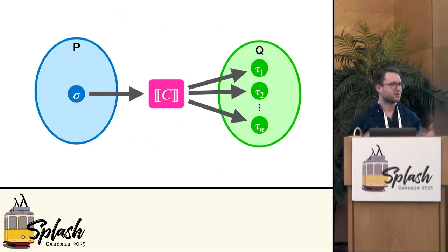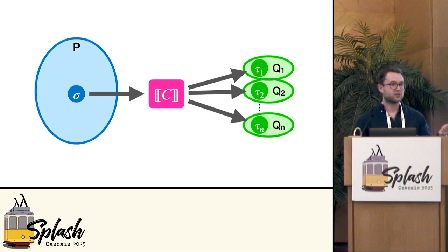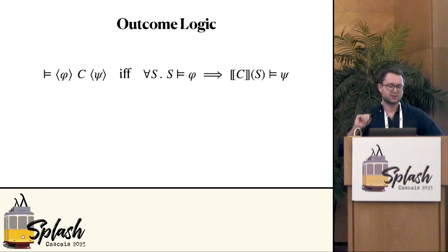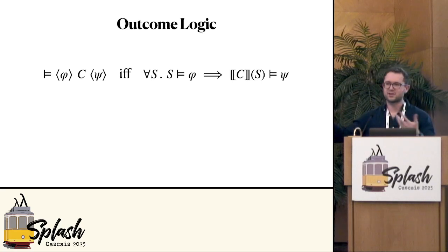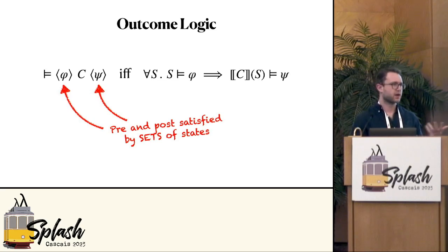Going back to the picture of what a Hoare triple looks like pictorially: this program has branching behavior, so we start in one state but end up in one of many states. What we do in outcome logic is say: why should you just get this one assertion to describe all of the end states? Why not give you an assertion to describe each of the outcomes? That's the intuition behind outcome logic. The semantics of outcome logic triples are similar to Hoare logic — preconditions describe valid start configurations and postconditions describe what happens when you run the program — but now the pre and postconditions are satisfied by sets of states rather than individual states, allowing us to talk about the branching behavior the program exhibits.